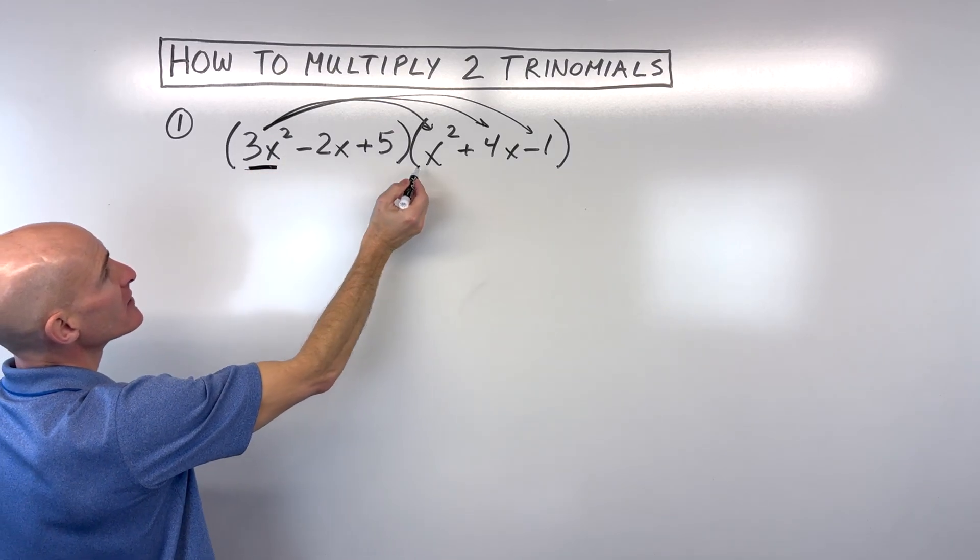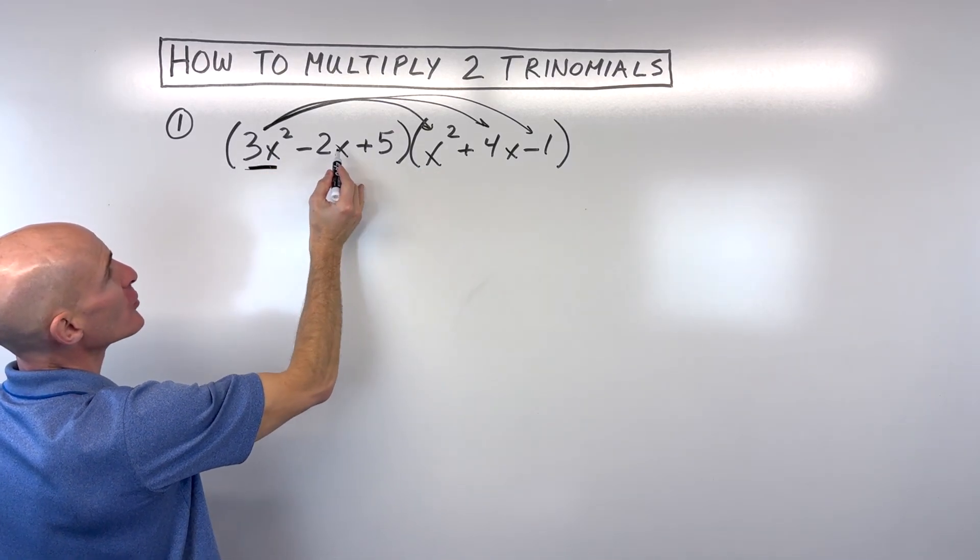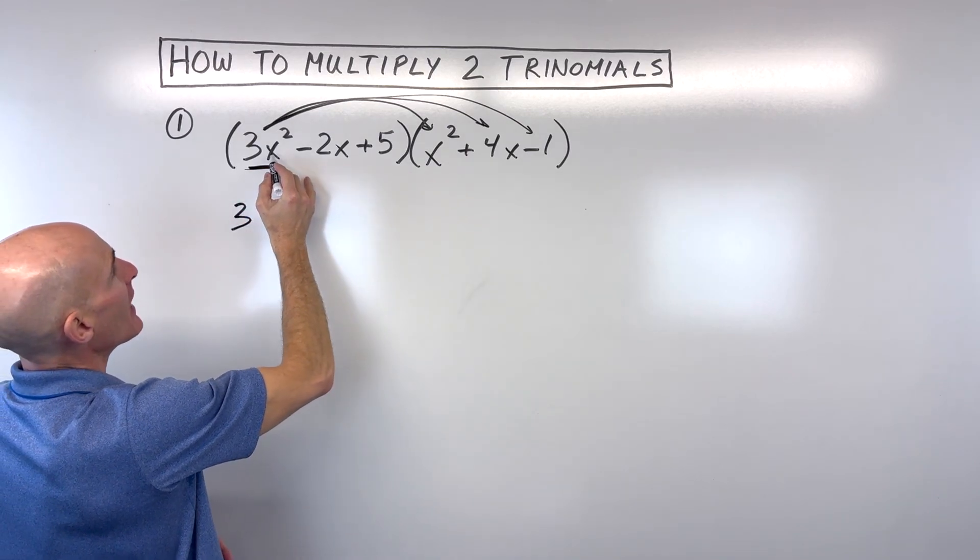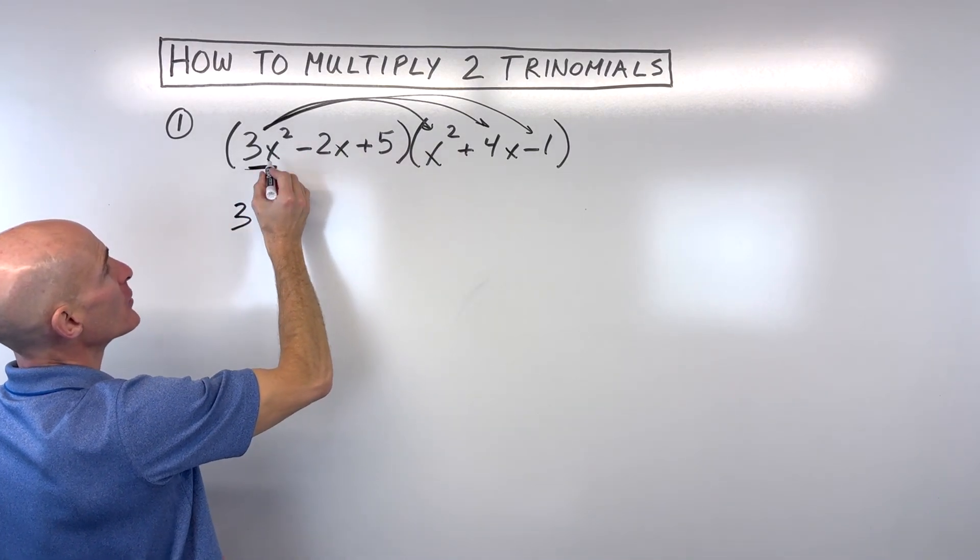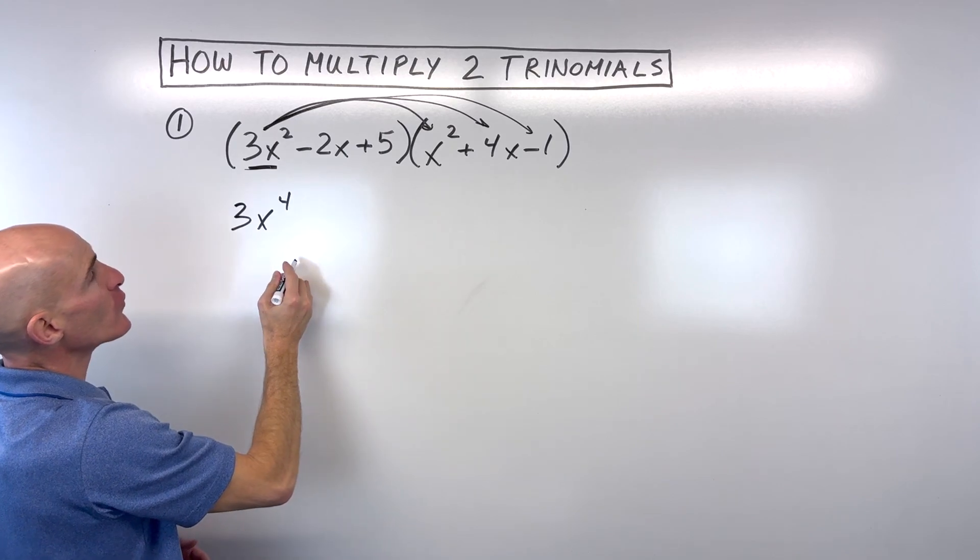So we've got 3x squared times 1x squared. You multiply the coefficients, 3 times 1, which is 3. x squared times x squared. When you multiply, you add the exponents, so that's x to the fourth.